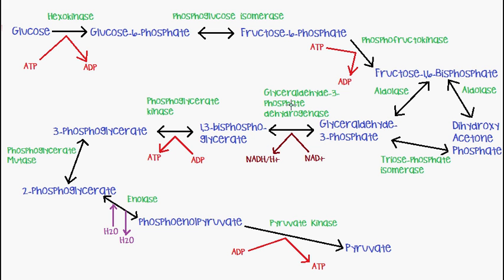The enzyme that catalyzes the conversion of glyceraldehyde-3-phosphate to 1,3-bisphosphoglycerate is glyceraldehyde-3-phosphate dehydrogenase. As expected with a dehydrogenase enzyme, NAD+ is used to form NADH — so we gain 1 NADH. Then 1,3-bisphosphoglycerate is converted into 3-phosphoglycerate by phosphoglycerate kinase, with ADP gaining a phosphate group to form ATP. So far we have 1 NADH and 1 ATP.